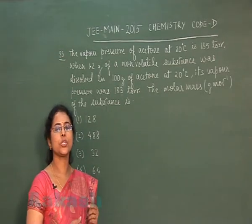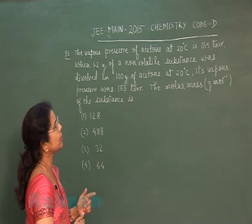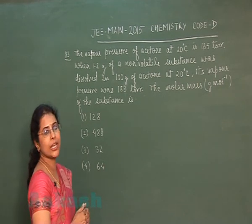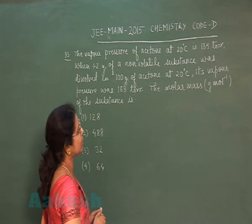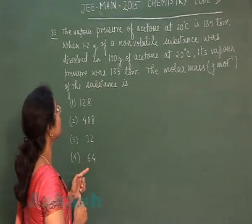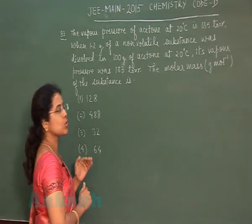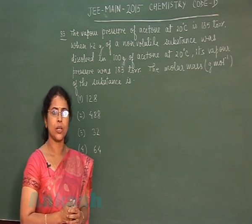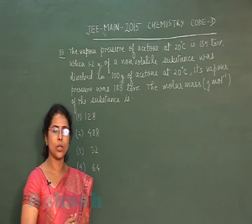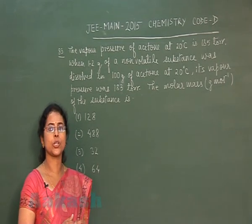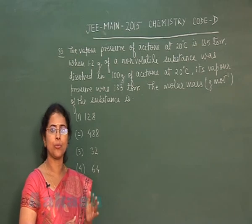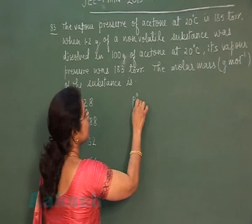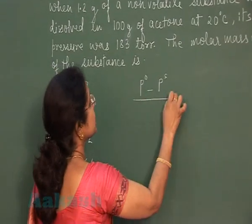Next question is question number 83. The vapour pressure of acetone at 20 degrees Celsius is 185 Torr. When 1.2 grams of a non-volatile substance was dissolved in 100 grams of acetone at 20 degrees Celsius, its vapour pressure was 183 Torr. Find the molar mass of the substance. This question is based on relative lowering of vapour pressure — when a non-volatile solute is dissolved in a solvent, the vapour pressure of the solution decreases compared to the pure liquid.